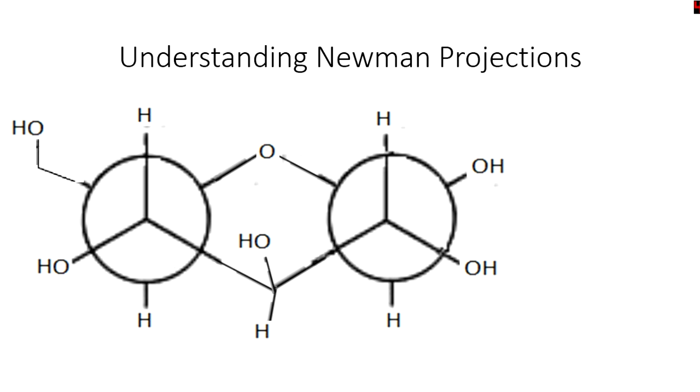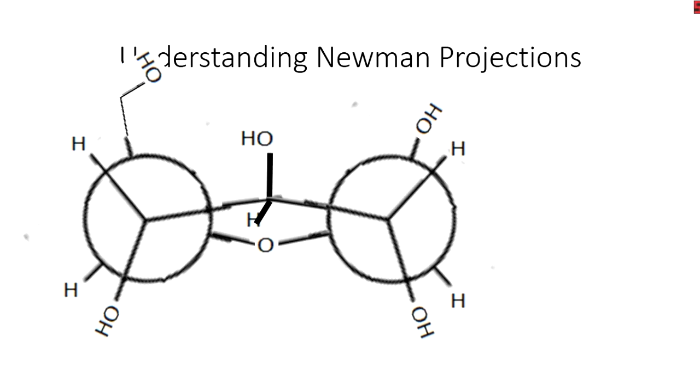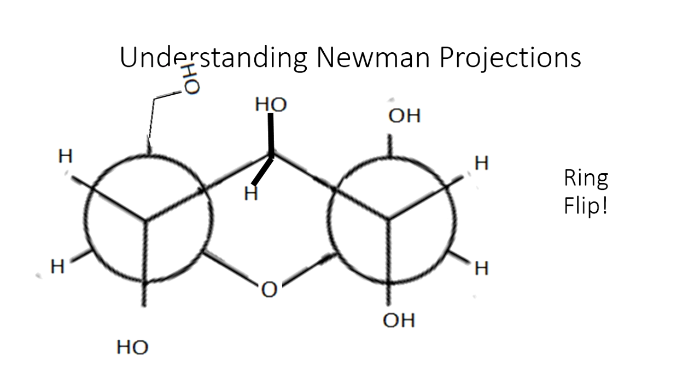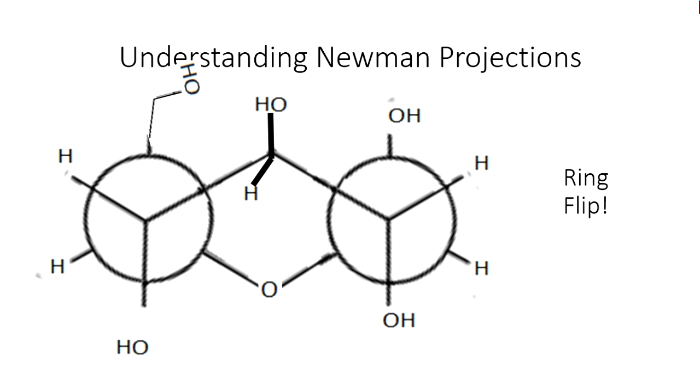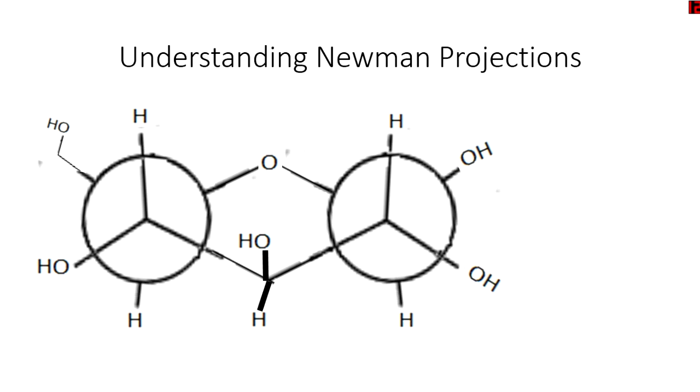And that was fast, but hopefully this is just a reference for you. So what happens when we ring flip this? Notice all of our axial positions now became equatorial. So we can say this is axial, axial, axial, axial in the back, axial in the back.